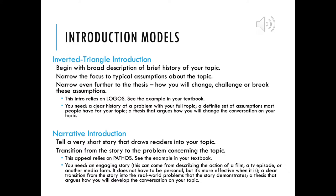The next one your book looks at is the narrative introduction. This is telling a very short story that draws readers into your topic — a different type of rhetorical appeal. Rather than giving facts and history as the inverted triangle does, we're going to appeal to the reader's pathos by describing the issue through the lens of a story. Then you're going to transition from the story to the problem concerning your topic. The appeal to pathos means you're going to write something that makes people feel something and gains their interest. For this type of introduction, you need an engaging story — this can come from describing the action of a film, a TV episode, or another media form.